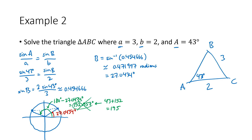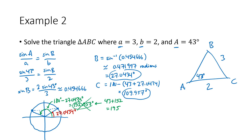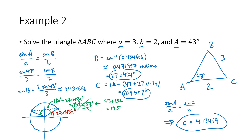So capital B is 27.0434 degrees. Angle C is then 180 minus 43 plus 27.0434, which works out to 109.957 degrees. With angle C and the known sides, we use the law of sines just like in example one to find side c: it works out to approximately 4.13469. You should verify that calculation on your own — it's very similar to what we did in example one.